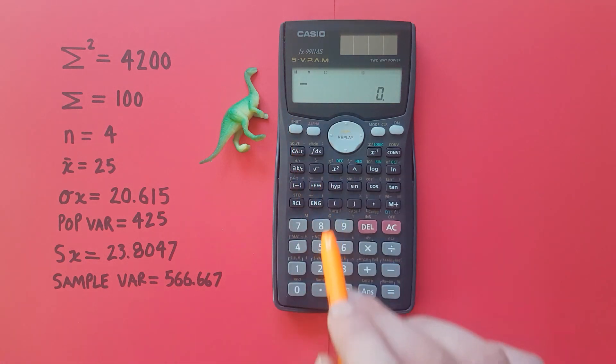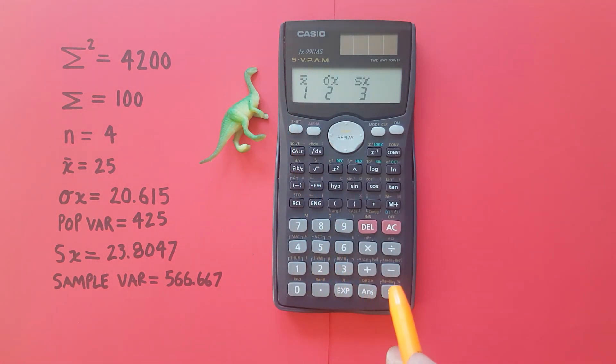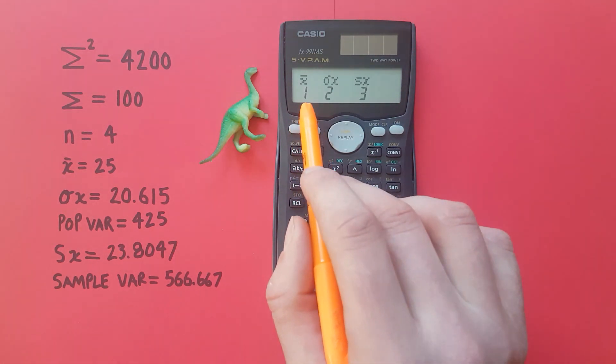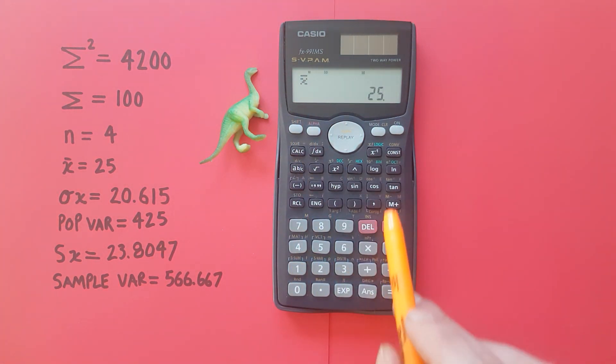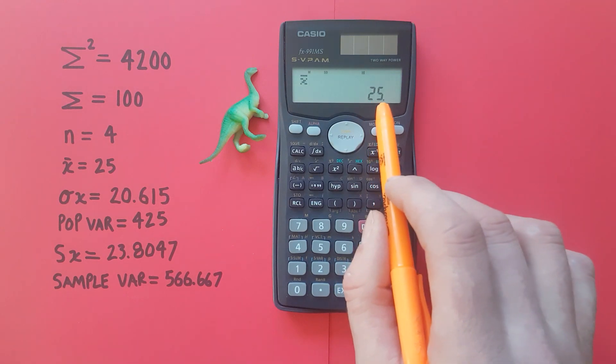All right if we go shift 2 that's our other set of statistics. Our first is the mean. So if we choose number 1 and press equals that gives us a mean of our data set 25.